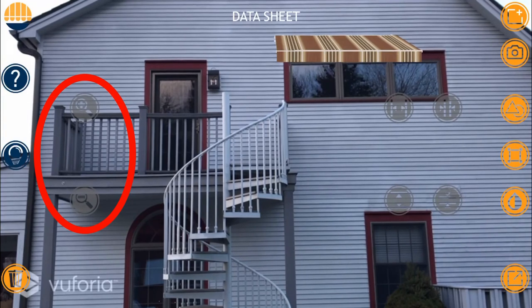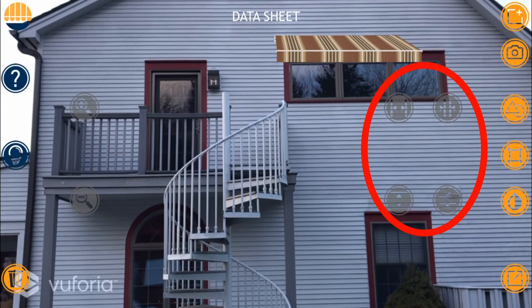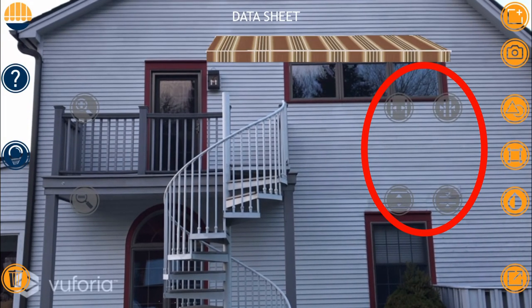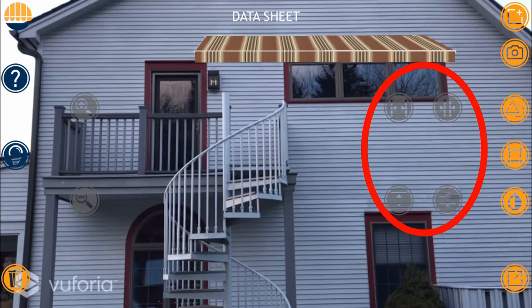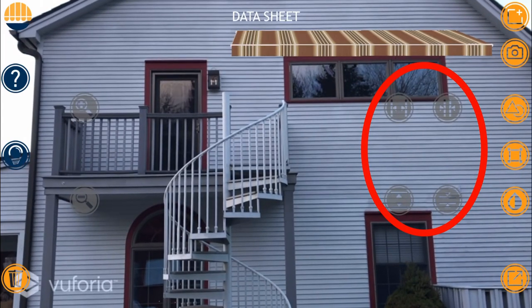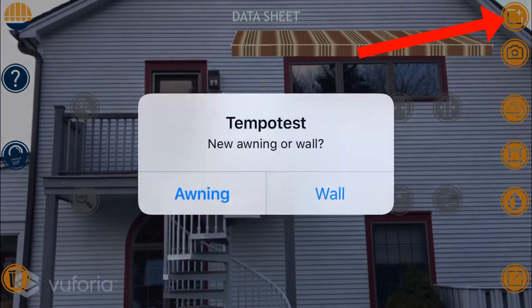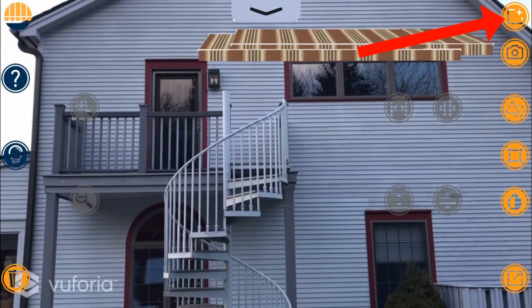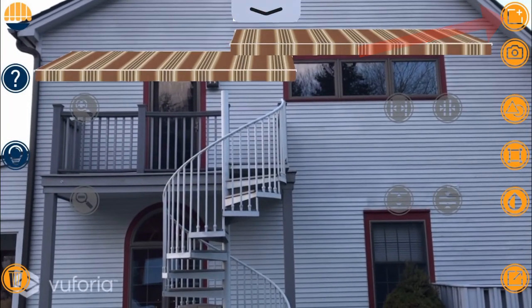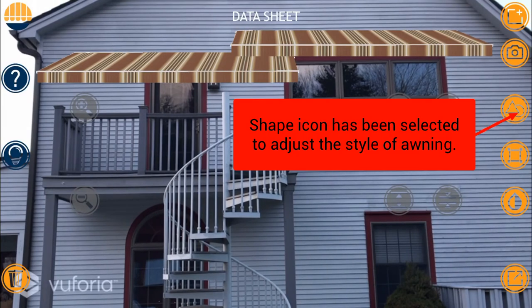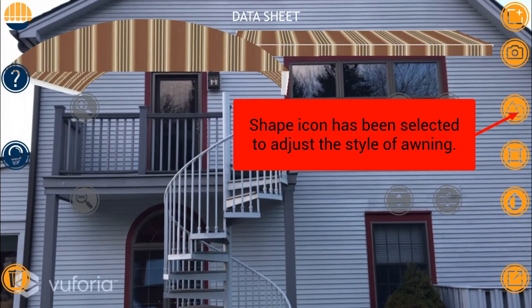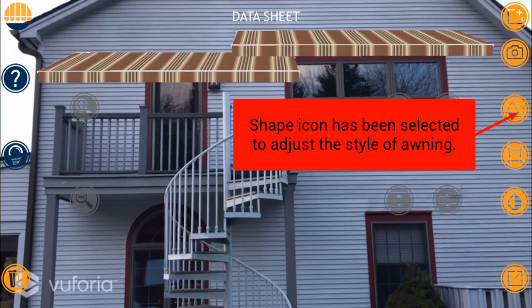Once I get the scale of the fabric where I want it, I can once again increase the size of my awning. You are also able to add as many awnings as needed by simply selecting the Add Awning icon again and choosing awning. In this situation, I'm going to switch it up to a different style.